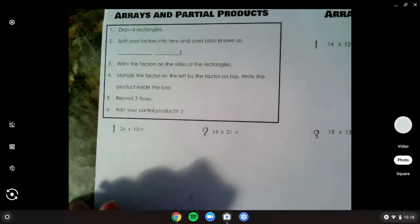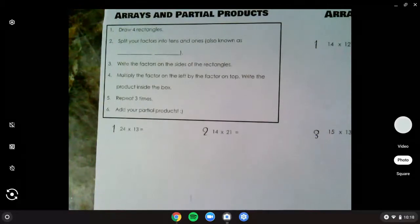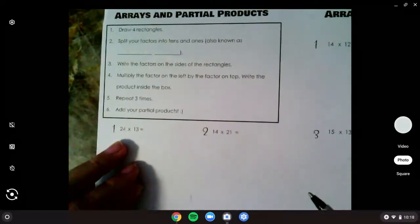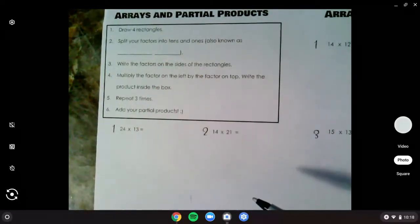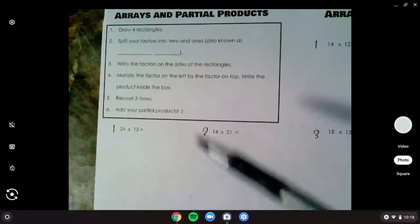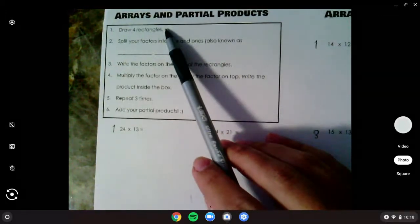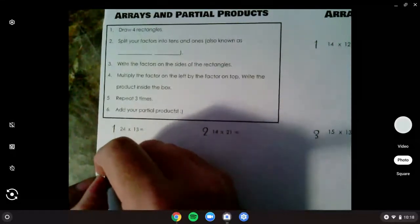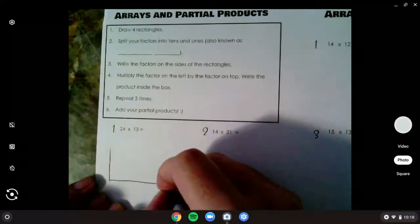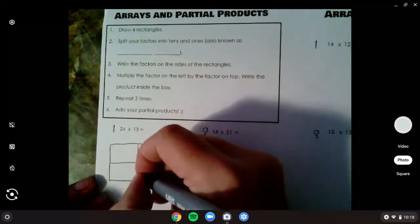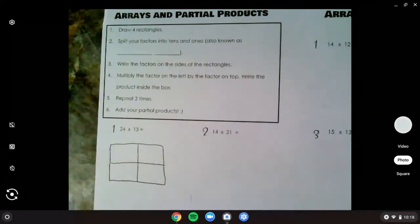Today, we're going to expand our thinking of multiplying two-digit by two-digit numbers. We're going to use arrays and partial products, kind of like when we did it with the four by one. Now we're going to do it with two by two, but we're going to have four boxes first. So we're going to draw four different rectangles, kind of like what we did yesterday too, but we're going to do it a little different. I'm going to do number one following through the directions.